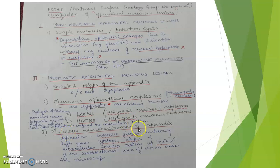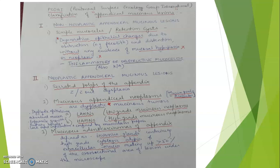Mucinous adenocarcinomas of the appendix are defined as invasive glands containing high-grade cytologic atypia and extracellular mucins making up more than 50% of the cross-sectional area of the lesion. If invasive glands are present with cytologic atypia, it is classified as mucinous adenocarcinoma. In summary, PSOGI classifies appendiceal mucinous lesions into non-neoplastic (simple mucoceles/retention cysts) and neoplastic (serrated polyps, LAMNs, HAMNs, and mucinous adenocarcinomas).